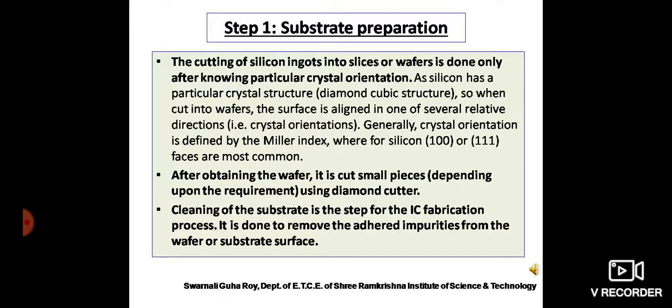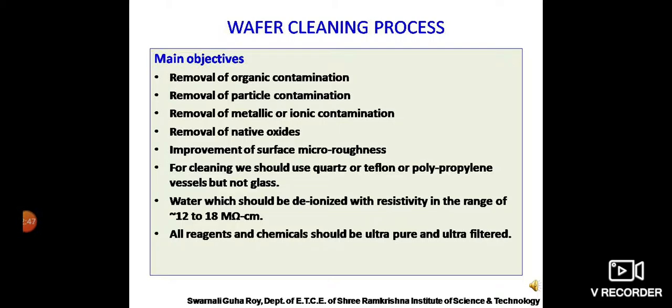After the cutting process, when we obtain the substrate — in this case, we are considering a rectangular substrate as shown in the previous slide. The main process which we have to start with is the cleaning of the wafer. Cleaning of the wafer is the primary step for the IC fabrication process. It is mainly done to remove the adhered impurities from the wafer or substrate surface. Different types of cleaning techniques have been developed in the past; I will illustrate one of the most commonly used techniques. But before that, we have to understand the main objectives of this wafer cleaning process.